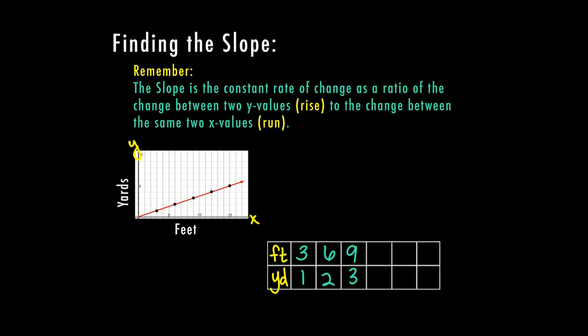When x is 12, y is four. When x is 15, y is five. And I can follow the pattern. I know the next one is going to be 18, and y is going to be six.